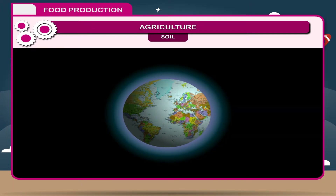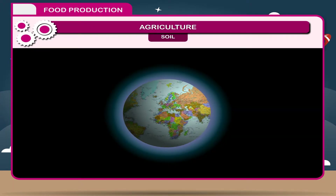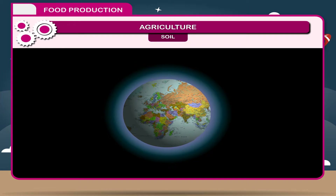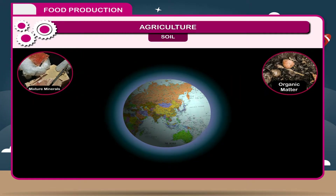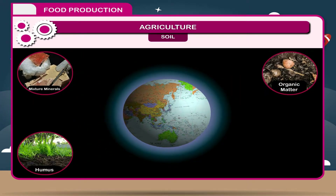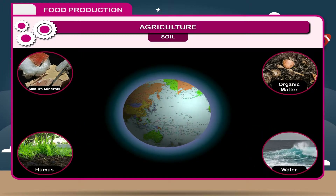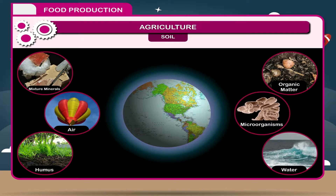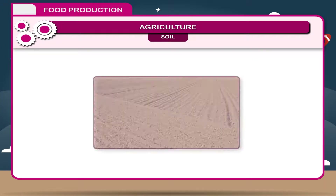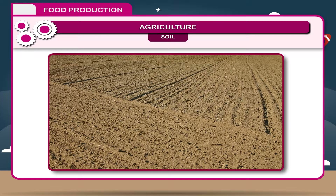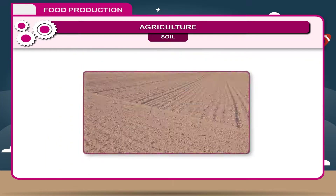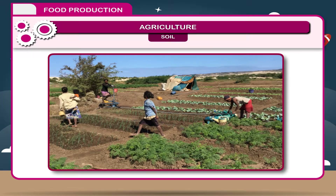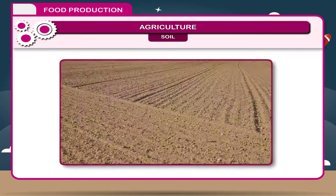Soil is the topmost layer of earth's crust which is a mixture of minerals, organic matter, humus, water, air and microorganisms. In the earlier class, you have read about soil in detail. For agricultural practices, soil is one of the most important factors.